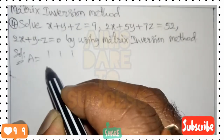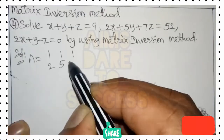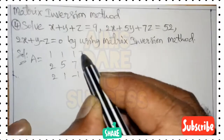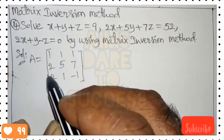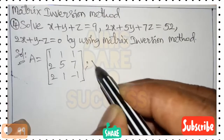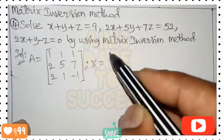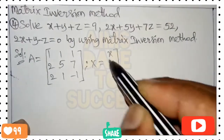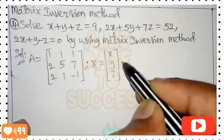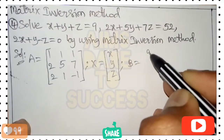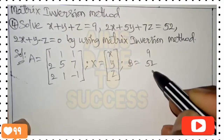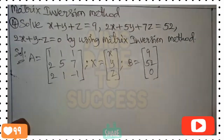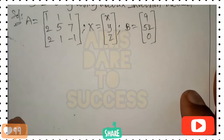Starting the solution: matrix A is formed from the xyz coefficients row-wise from the three equations: 1 1 1 / 2 5 7 / 2 1 -1. Capital X is the variable matrix with x, y, z written in column form. Matrix B contains the constant values from the right-hand side of the three equations: 9, 52, 0, written column-wise.